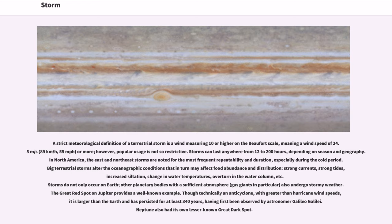Storms do not only occur on Earth. Other planetary bodies with a sufficient atmosphere, gas giants in particular, also undergo stormy weather. The Great Red Spot on Jupiter provides a well-known example. Though technically an anti-cyclone, with greater than hurricane wind speeds, it is larger than the Earth and has persisted for at least 340 years, having first been observed by astronomer Galileo Galilei.